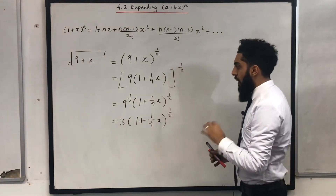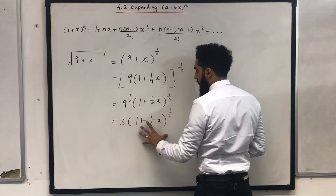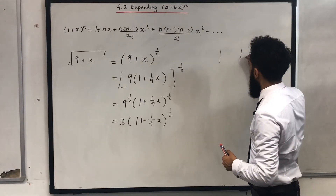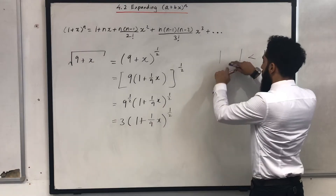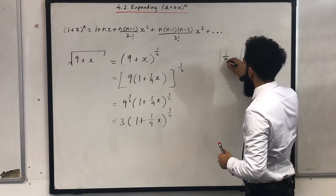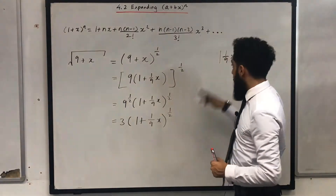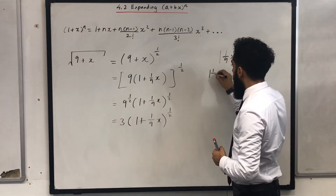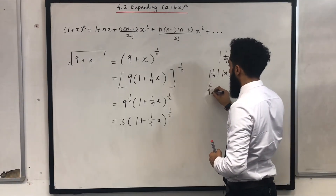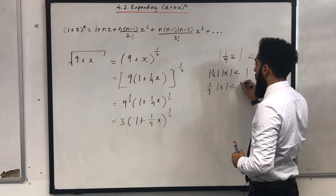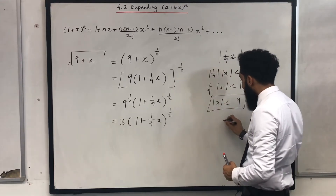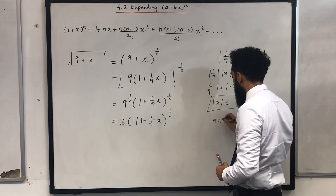For what values of x will this expansion be valid? What I need to do is write the modulus condition: the modulus of (1/9)x must be less than 1. I can split this modulus into two parts: mod(1/9) times mod(x) less than 1. Mod(1/9) is just 1/9, so mod(x) less than 1. Rearranging, you get mod(x) less than 9, which is the same as writing x is between −9 and 9.